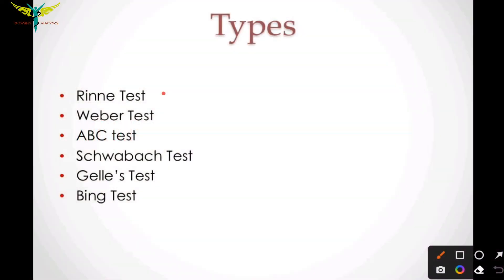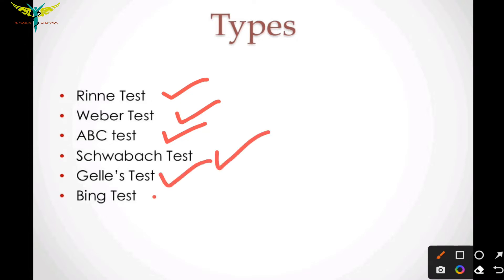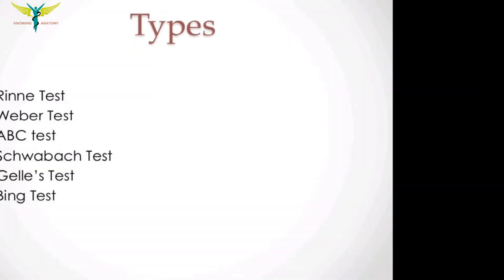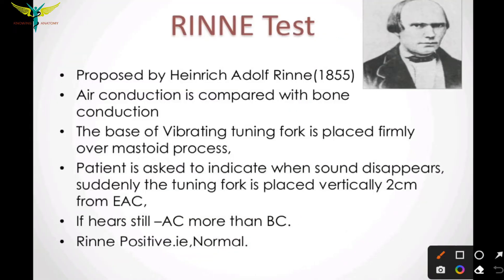These are the types of the tuning fork tests: the Rinne test, Weber's test, absolute bone conduction or the ABC test, Schwabach test, Gelle's test, and the Bing test. We will be learning about each test in detail. Coming to the Rinne's test...